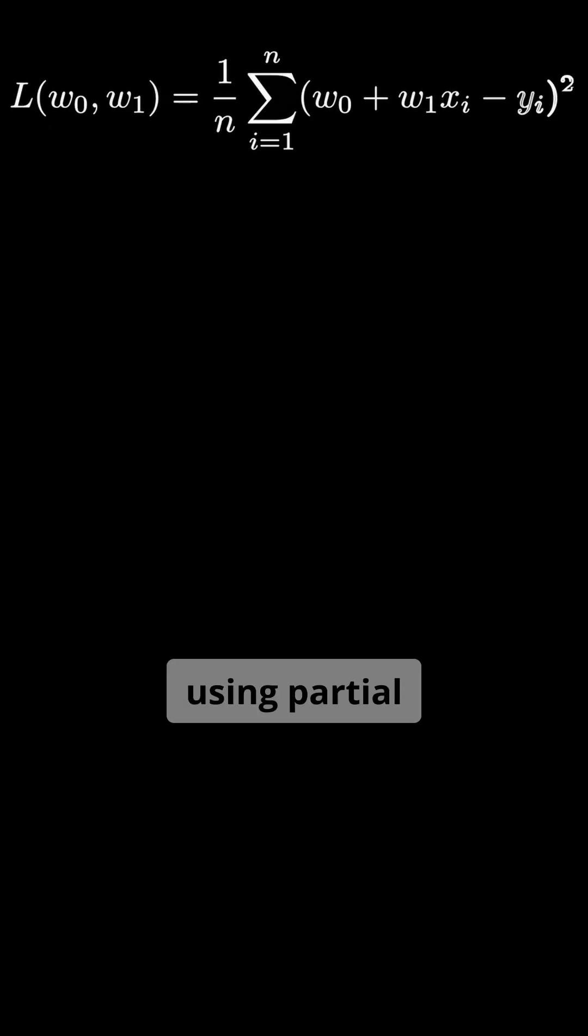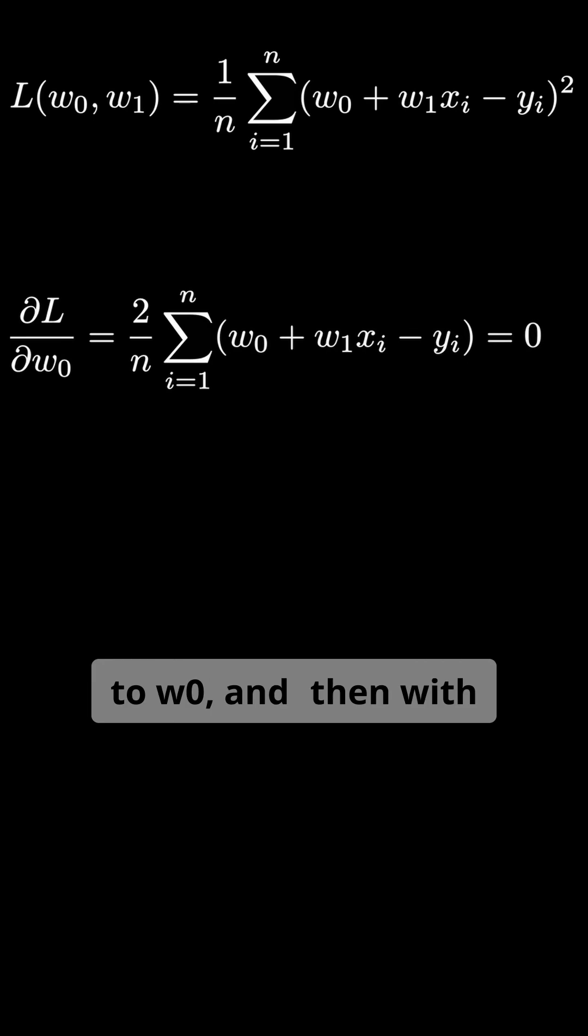Now let's solve for w using partial derivatives. First, we take the derivative with respect to w0, and then with respect to w1.